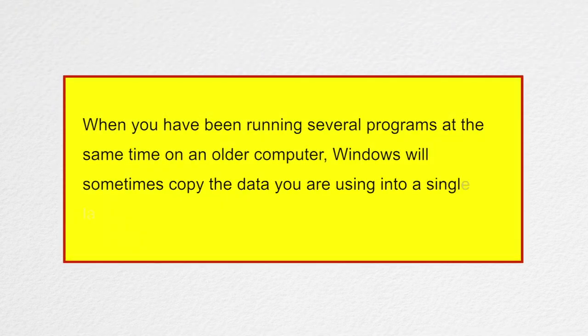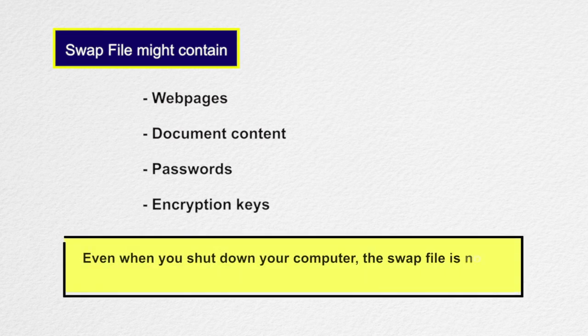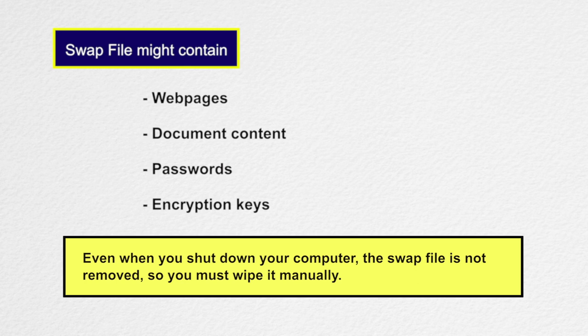The Windows swap file: when your computer's memory is full — for example when you have been running several programs at the same time on an older computer — Windows will sometimes copy the data you are using into a single large file called the swap file. As a result, this file might contain almost anything, including web pages, document content, passwords, or encryption keys. Even when you shut down your computer, the swap file is not removed, so you must wipe it manually.